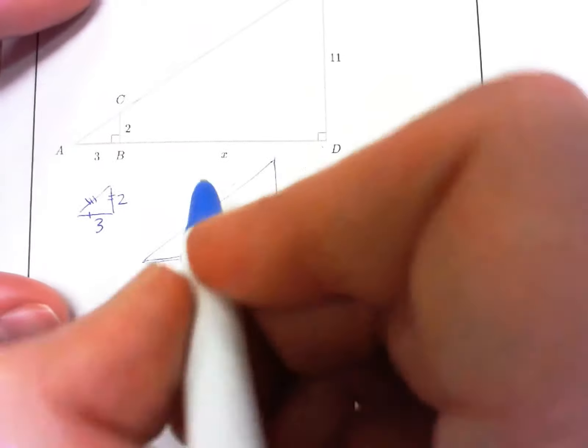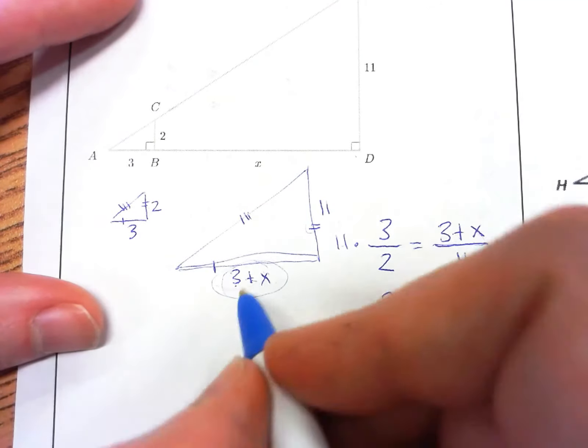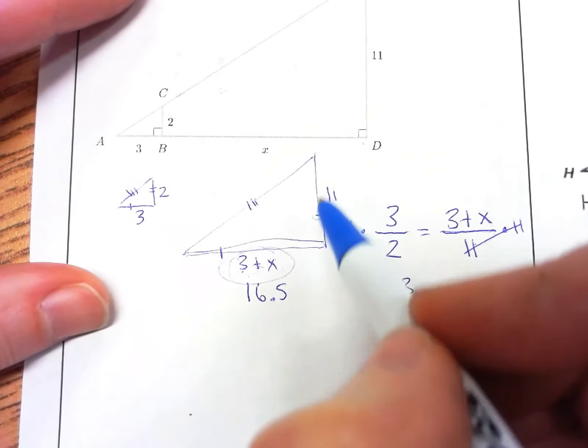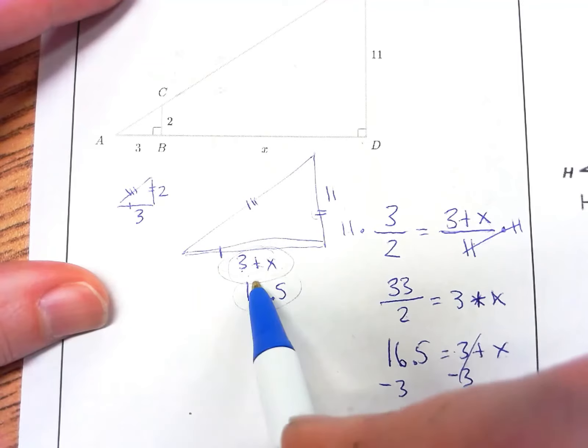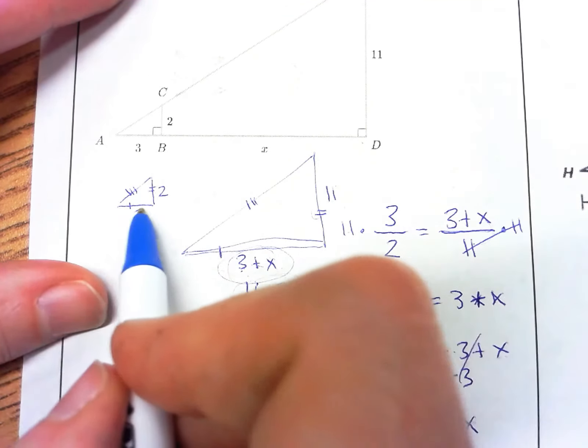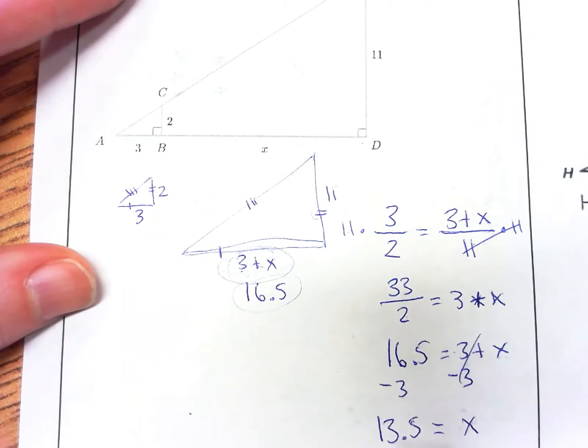This right here, 13.5 plus 3, would be 16.5. So if we look at this, 16.5 is slightly larger than 11, so the base should be a little bit bigger than the height. Base right here, 3, slightly larger than 2. So the ratio makes sense here.